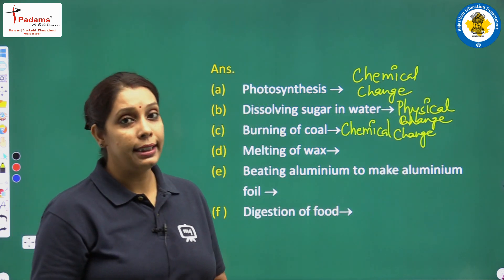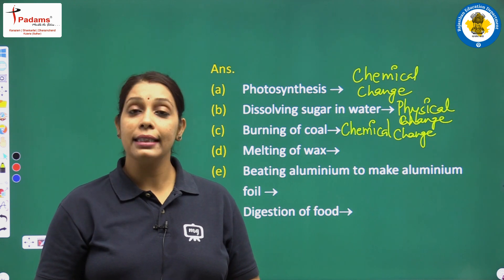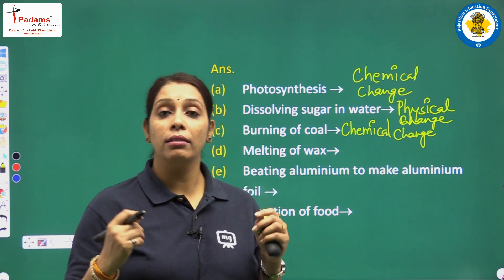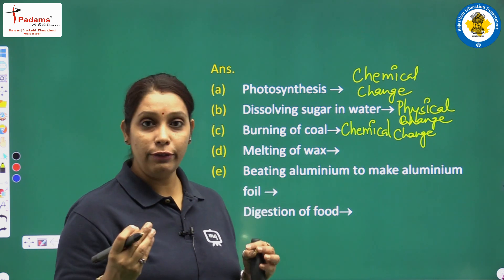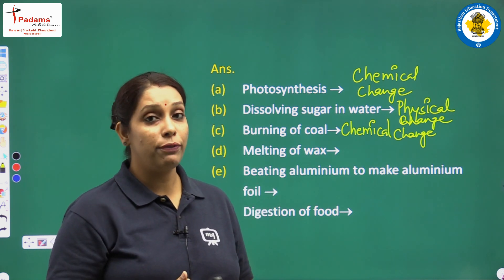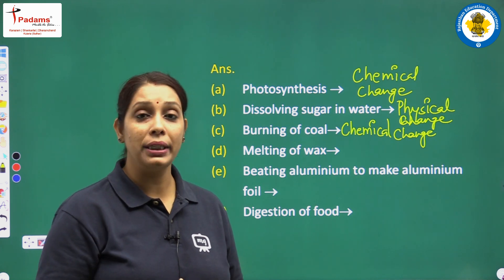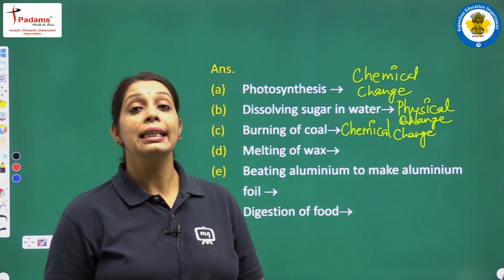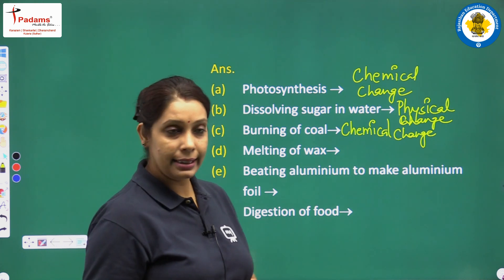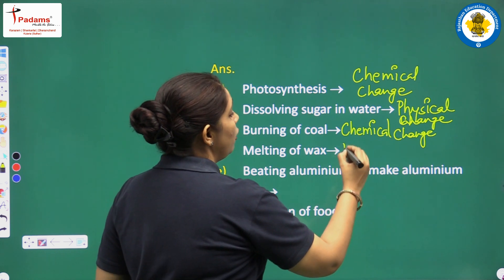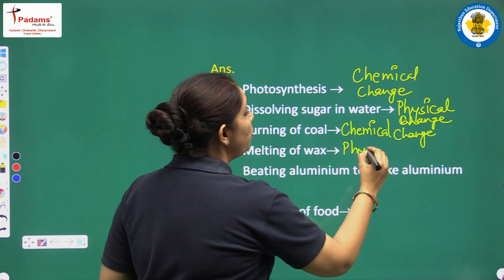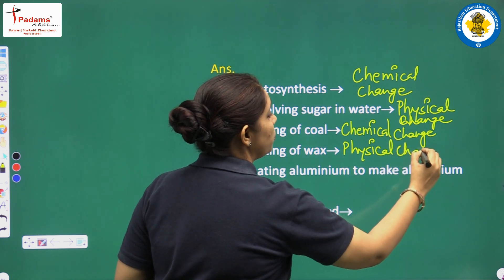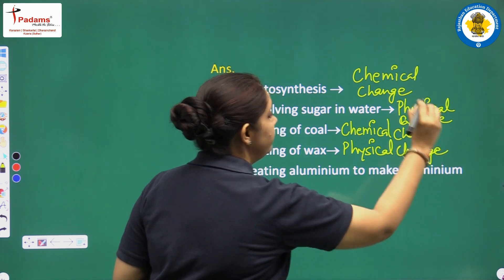Melting of wax is a physical change. Why? Because previously wax is in solid form, but when we provide heat to it, it starts melting and there is a change in state from solid to melted. No new product is formed here. So it is a physical change.